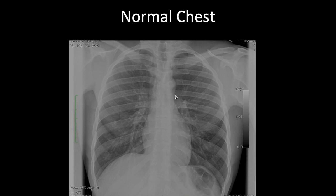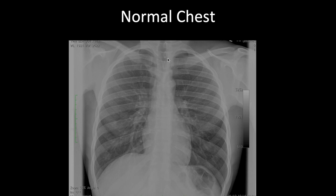Look at the mediastinal outline. On the left: the aortic arch with a little descending aorta, then the central pulmonary arteries — the pulmonary bay — which should be flat. If it bulges, this may mean enlarged central pulmonary vessels as in pulmonary hypertension, or a mass. The rest of the left heart border is mainly the left ventricle. On the right heart border is the right atrium. Centrally you have the trachea with right and left main stem bronchi. On the right, there should be a thin paratracheal stripe no more than two millimeters.